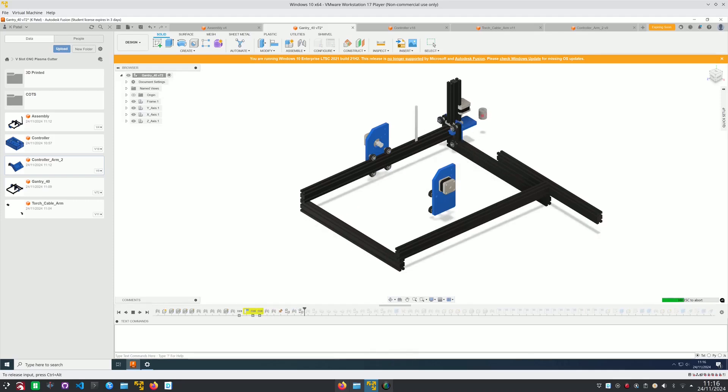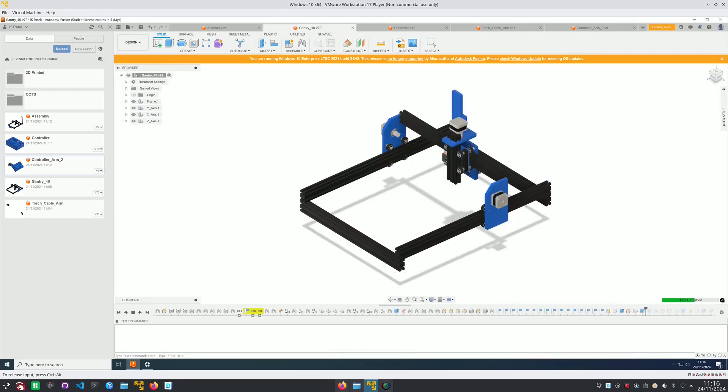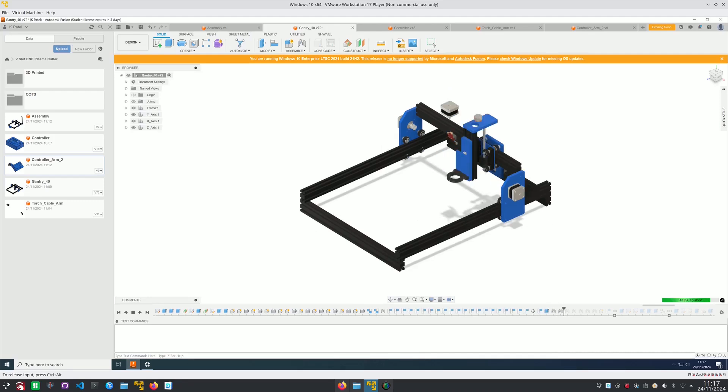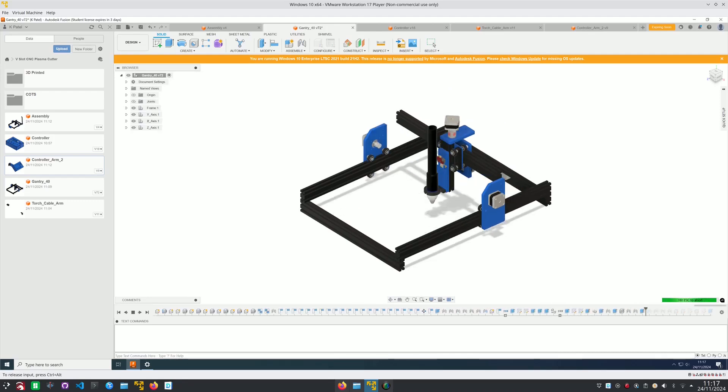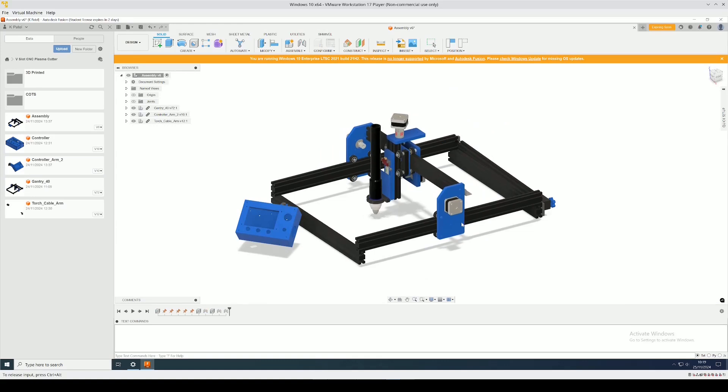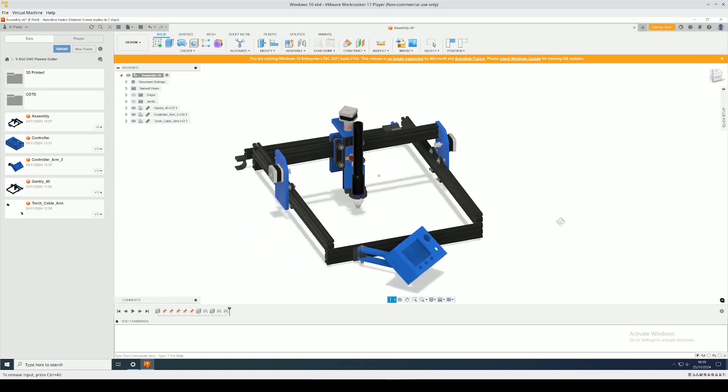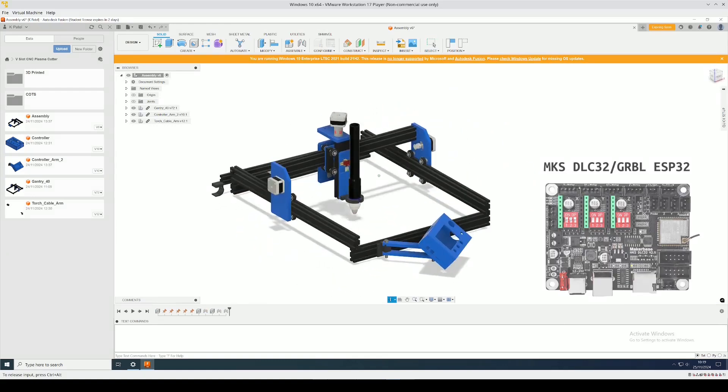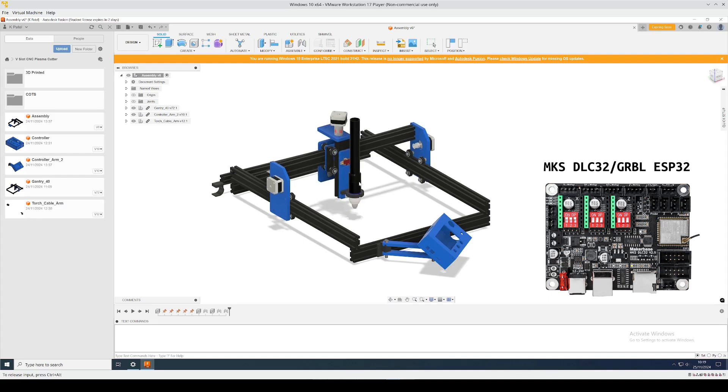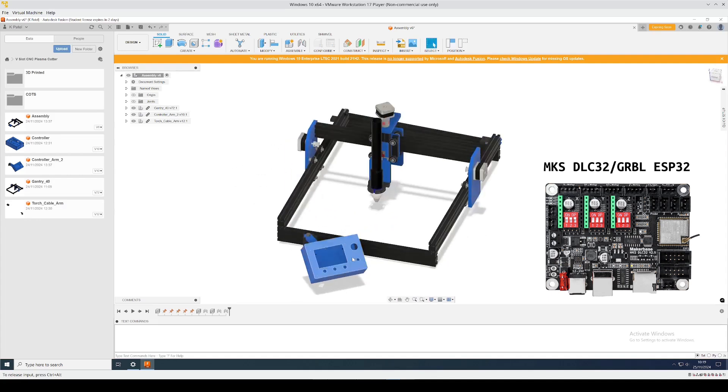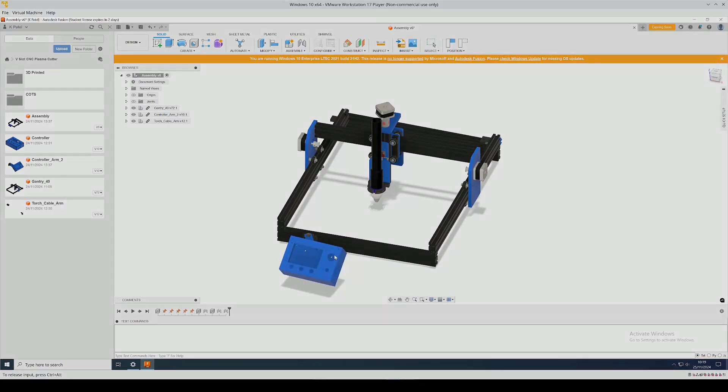This was made using aluminum extrusion, meaning the work area is really quite flexible, limited only by the size of the lengths. It features a Z-probe for setting the height of the torch automatically, and the whole thing is controlled using the open-source FluidNC 32 controller, which was also used in my last project on the laser cutter. Let's get started.